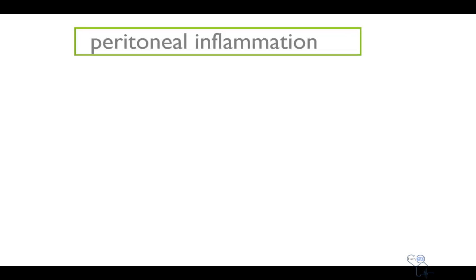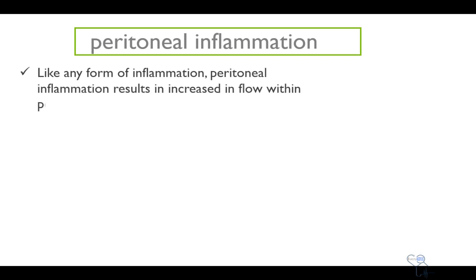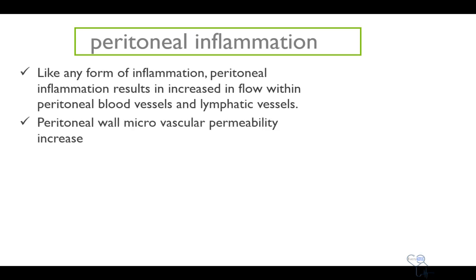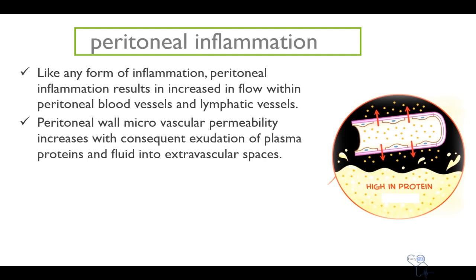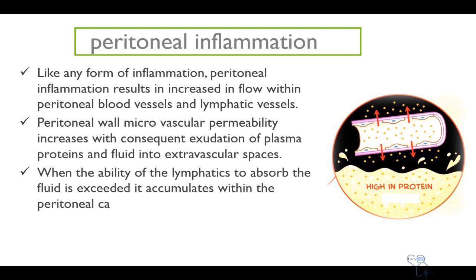Peritoneal inflammation can also lead to ascites. Like any form of inflammation, peritoneal inflammation results in an increase in flow within the peritoneal blood vessels and the lymphatic vessels. Peritoneal wall microvascular permeability increases, with consequent exudation of plasma proteins and fluid into the extravascular space. When the ability of the lymphatics to absorb the fluid is exceeded, it accumulates within the peritoneal cavity. Due to the high protein content in this fluid, reabsorption is also impaired, which worsens ascites.